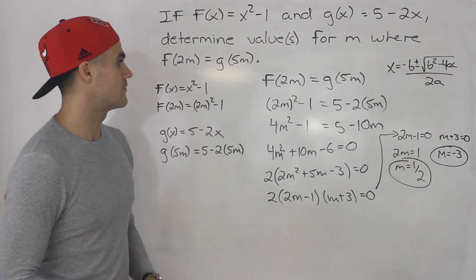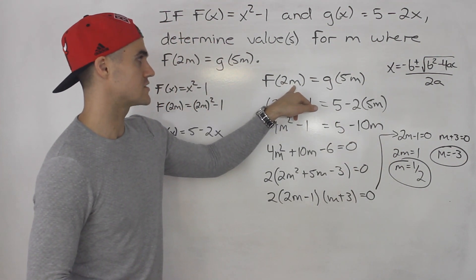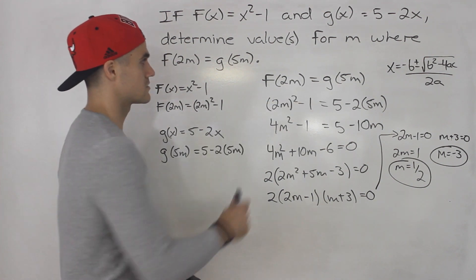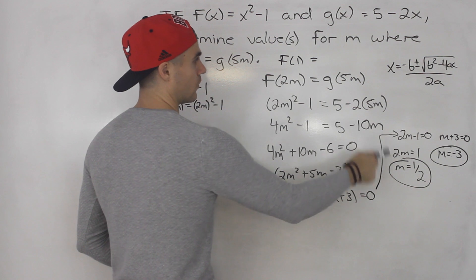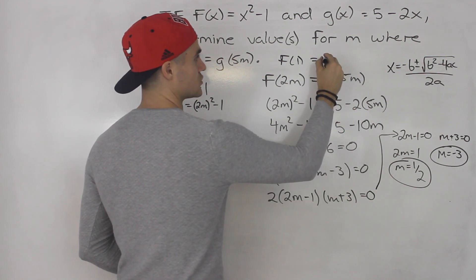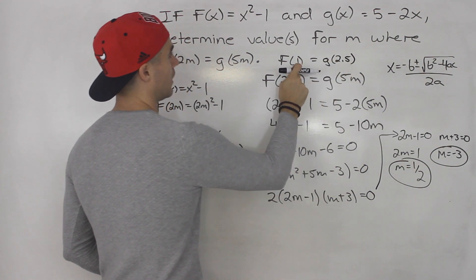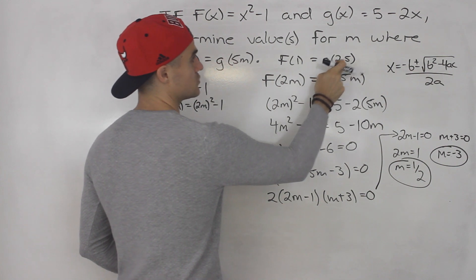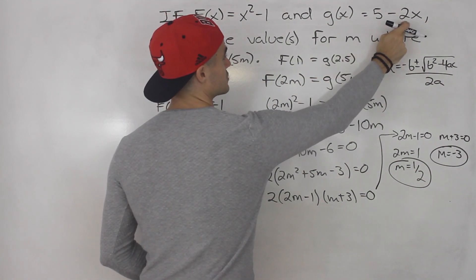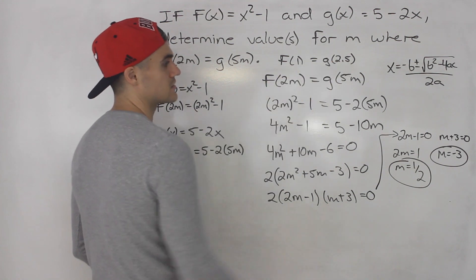If you actually plug in 1/2 here, 2 times 1/2 is just 1. So basically, f(1) should equal—1/2 times 5 is 2.5—so g(2.5). If you plug in 1 for x, you have 1² - 1 = 0. And if you plug in 2.5 for x here, you have 5 - 2(2.5) = 0 as well. So the left side equals the right side.